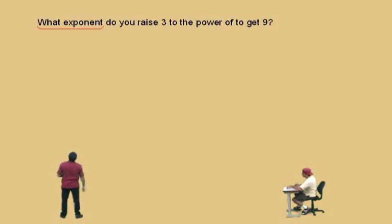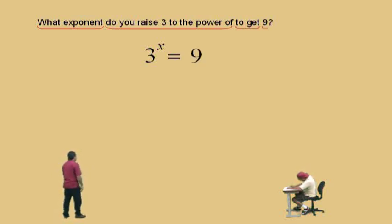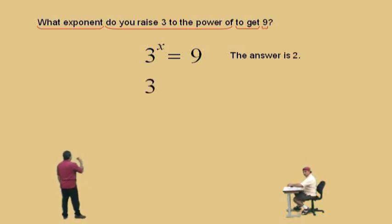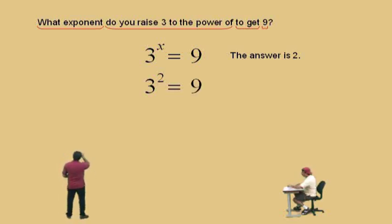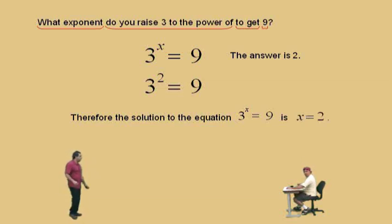Watch, pay attention, Charlie. 'What exponent?' — we'll let that be x. 'Do you raise 3 to the power of?' — so 3 is our base. 'To get?' — that'll be equals 9. Now, what is the answer, Charlie? If 3 to the x power equals 9, the answer is x equals what? 2. That's right, Charlie. That's because 3 raised to the second power is equal to 9. So in our equation, 3 to the x power equals 9, x is equal to 2, because the solution is 2. So you are doing logarithms, Charlie!